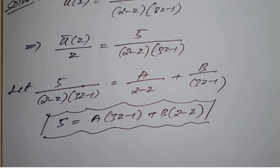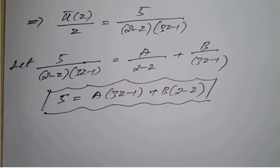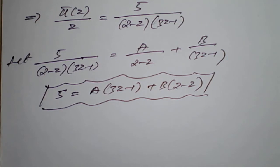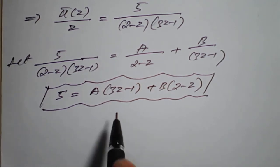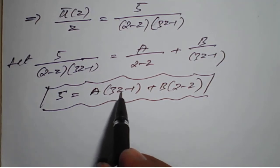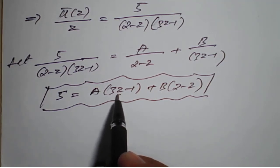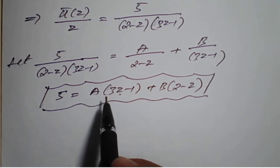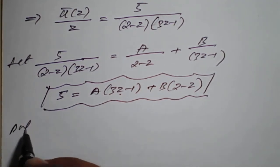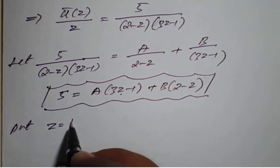From this equation we can find the values of A and B, which we can then apply to get the inverse Z-transform. To make A vanish, we need the coefficient of A to become zero, so we put z = 1/3 in the expression.